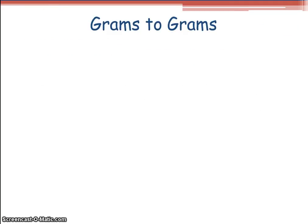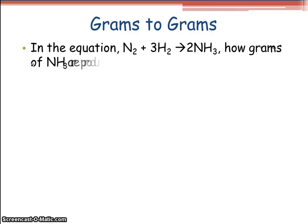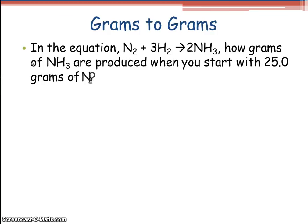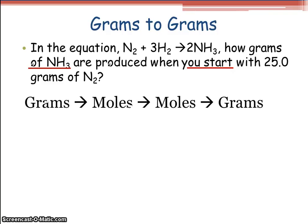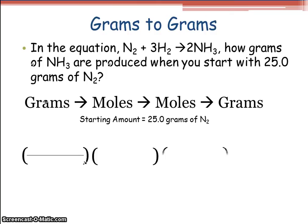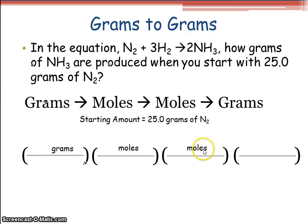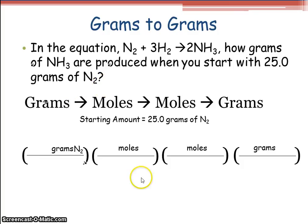Grams to grams. In the equation N₂ + 3H₂ yielding 2NH₃, how many grams of NH₃ are produced when you start with 25.0 grams of N₂? We're going to use the grams-to-moles-to-moles-to-grams setup every time, starting with 25.0 grams of N₂. I like to draw four different parentheses representing grams to moles to moles to grams, bringing each unit down as we go. Compound 1 is whatever you're starting with — in this case N₂ — so we go from grams of N₂ to moles of N₂.